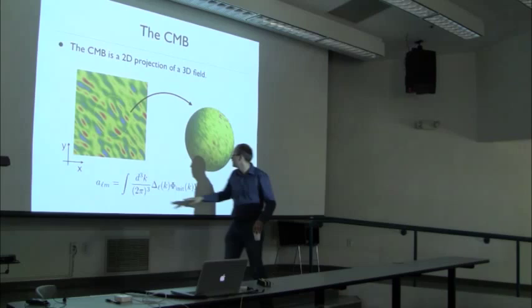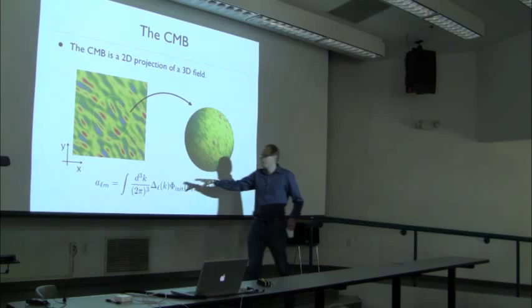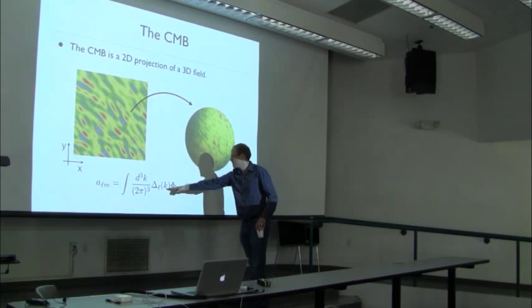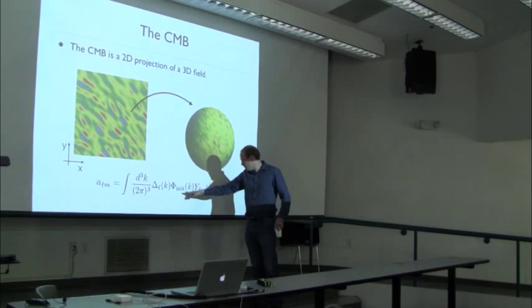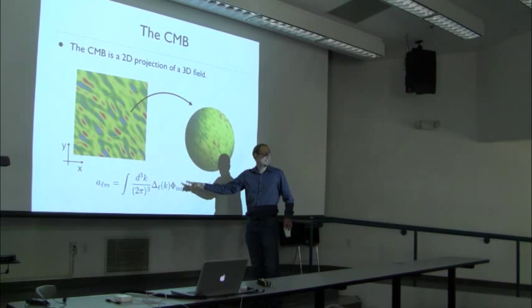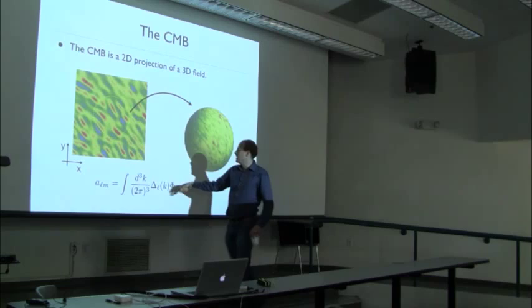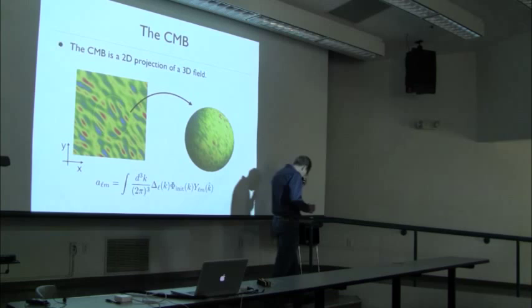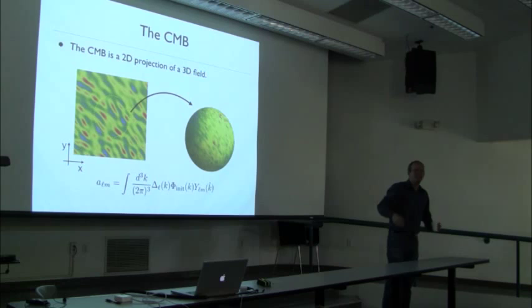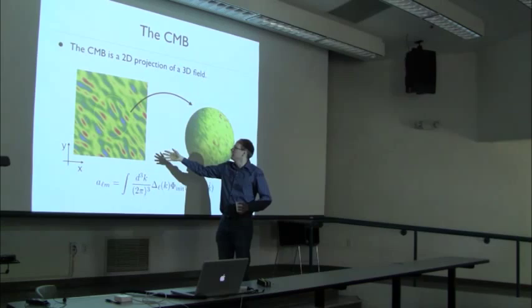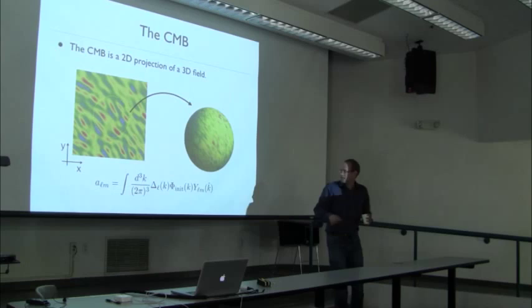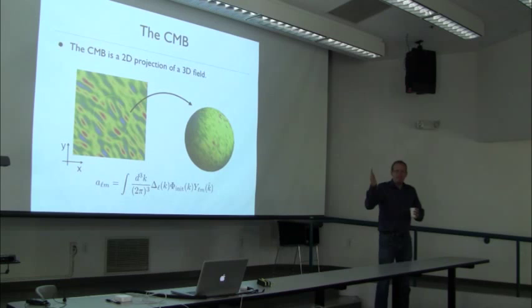For all intents and purposes there exists a map between this field — which is really a four-dimensional field — and what we see on the CMB sky. As I mentioned in lecture one, the way to think about that is to decompose the temperature fluctuations in the CMB into spherical harmonics. The spherical harmonic coefficients are related through the transfer function to the 3D gravitational potential on the surface of last scattering.